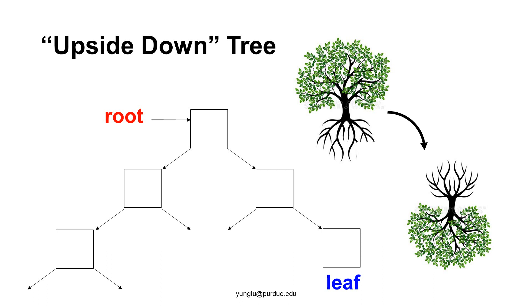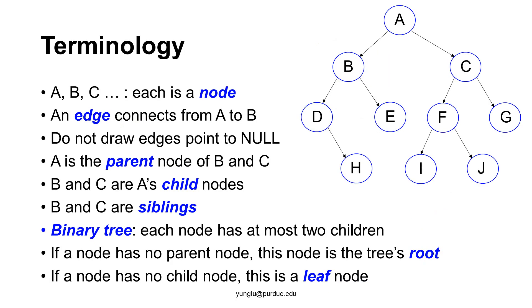The root is at the top and the leaves are at the bottom. This is the convention. Let's introduce some definitions. A tree has nodes and edges. The nodes represent the allocated memory. Each edge means a pointer storing the addresses of the memory of the other nodes.